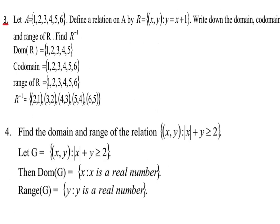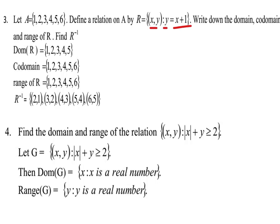Question number seven: let set A contain the elements 1, 2, 3, 4, 5, 6. Define a relation on A by R equals the set of ordered pairs (x, y) such that y equals x plus one. By substituting the elements of A into the relation y equals x plus one, we obtain R as {(1,2), (2,3), (3,4), (4,5), (5,6)}. The domain of R is {1, 2, 3, 4, 5}.